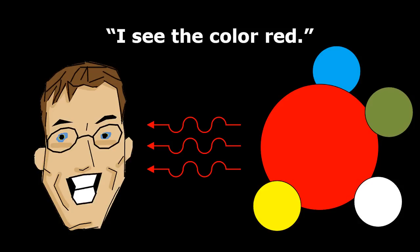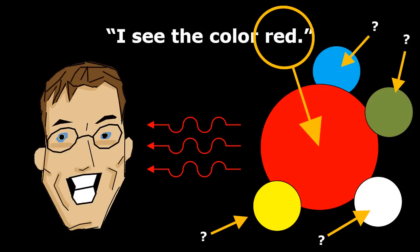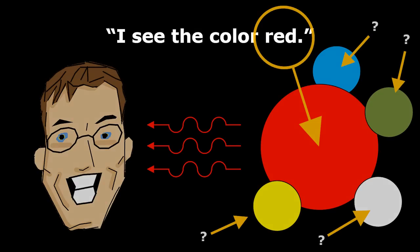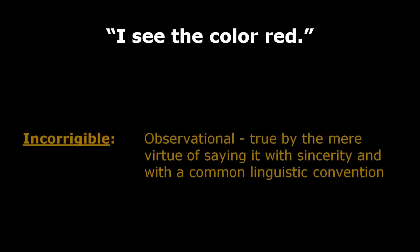The word red itself is merely a label that I slap onto the experience as a tool for differentiating it from other similar experiences. Observational statements of this form are called incorrigible and are again 100% true simply by the mere virtue of making them. The only requirement is that the person doing so is being honest and again uses a standard terminology that others can understand.